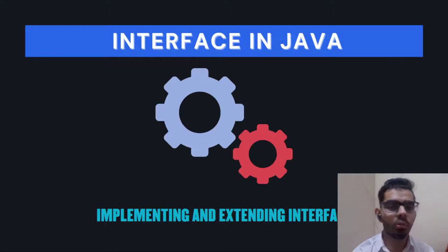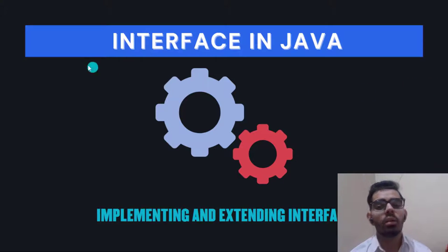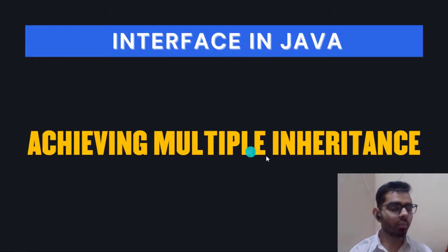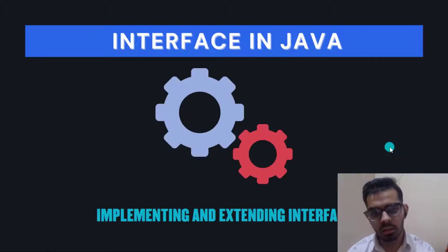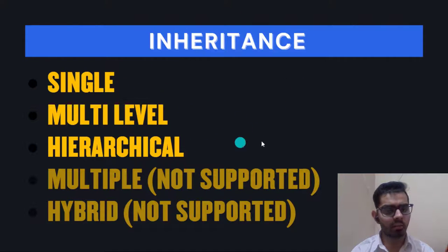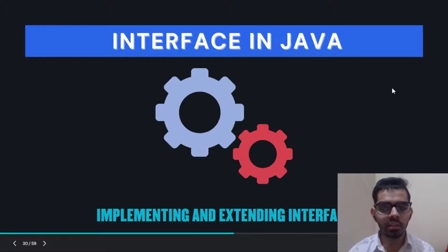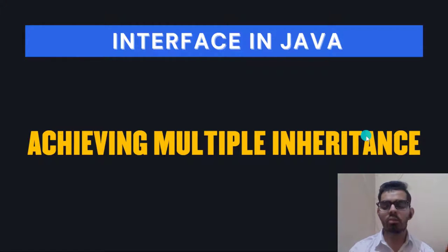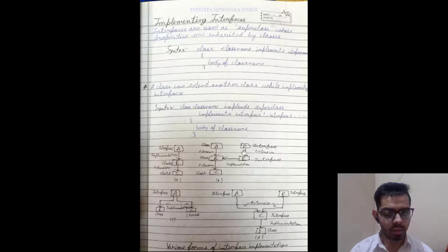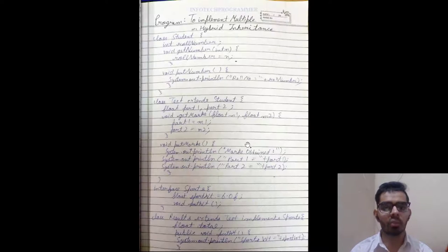The next concept is interfaces in Java. Interfaces allow us to achieve multiple inheritance in Java. I've explained what an interface is, how to use it, how to implement it, and how to extend an interface. Single, multi-level, and hierarchical inheritance can be achieved through standard Java, but for multiple and hybrid inheritance we need interfaces. I've provided notes and programs explaining how to achieve multiple inheritance through interfaces, including hybrid inheritance.